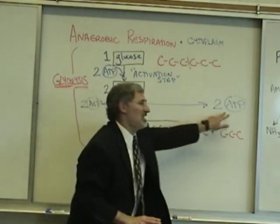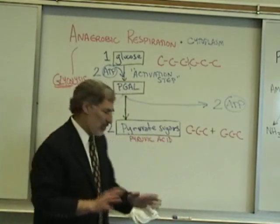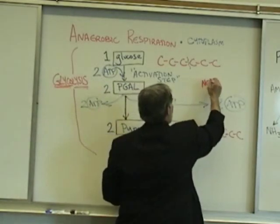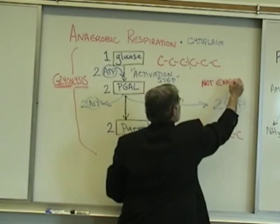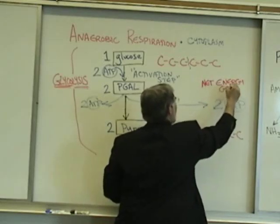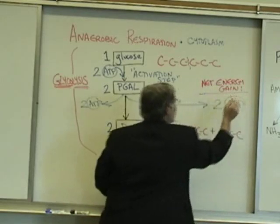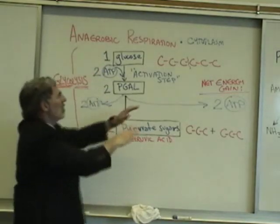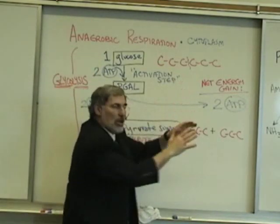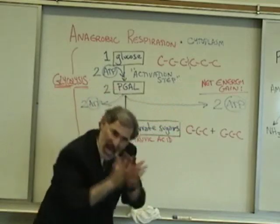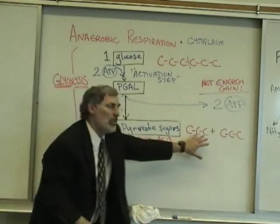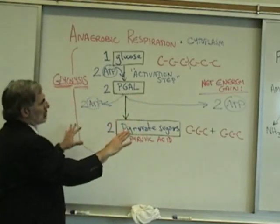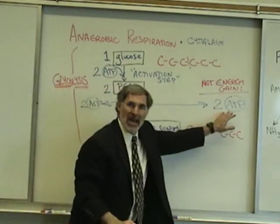The next two ATPs that are produced represent a net energy gain. We are now ahead by two ATPs. So even though in glycolysis, which involves the splitting of a glucose molecule in half forming two pyruvate sugars, four ATPs are produced, we're only ahead by two.